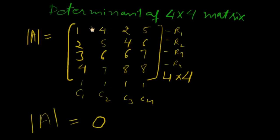Because columns C1 and C3 are proportionate—meaning C3 is double of C1—so if two rows or two columns are proportionate, then its determinant will be zero. Thank you very much.